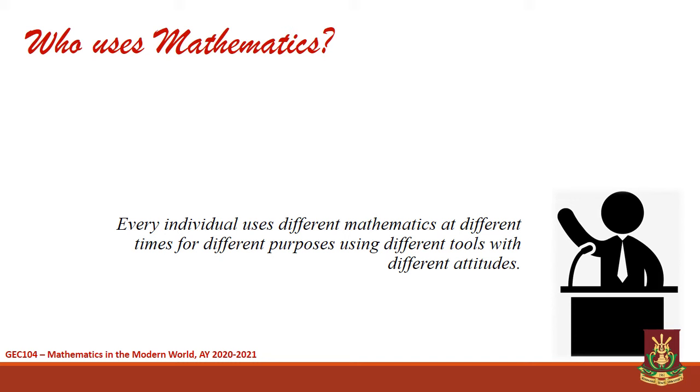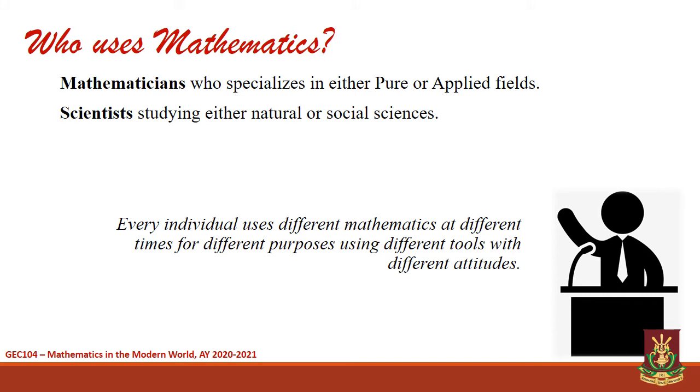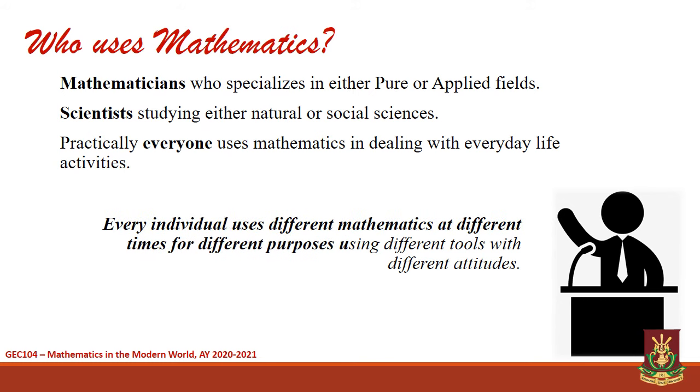As to who uses mathematics, first in the list are mathematicians. Mathematicians can actually be classified according to whether they study pure mathematics or applied mathematics. Second, mathematics is being used by scientists who are studying either natural sciences or social sciences. And third, practically everyone uses mathematics in their everyday life activities. In conclusion, every individual uses different mathematics at different times for different purposes using different tools with different attitudes.